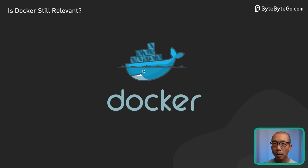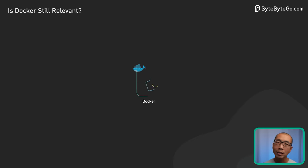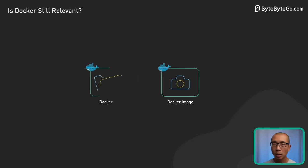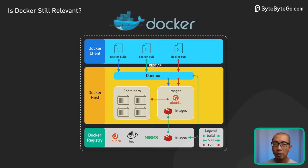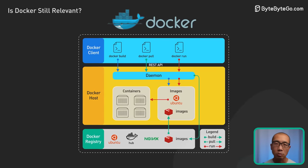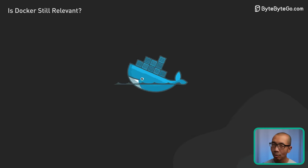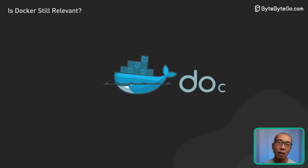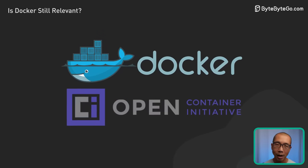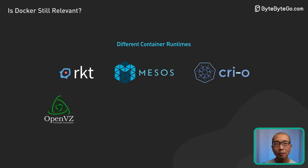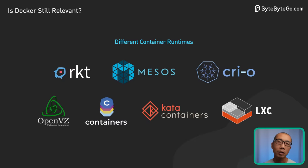In short, Docker has popularized several key concepts in containerization: one, a standard image format; two, streamlined building of container images; three, enabling the sharing of images through registries; four, facilitating the actual running of containers. While Docker initially relied on proprietary technology, it has increasingly embraced open standards like OCI. This openness has paved the way for alternative clients, runtimes, and registries that also adhere to these standards.